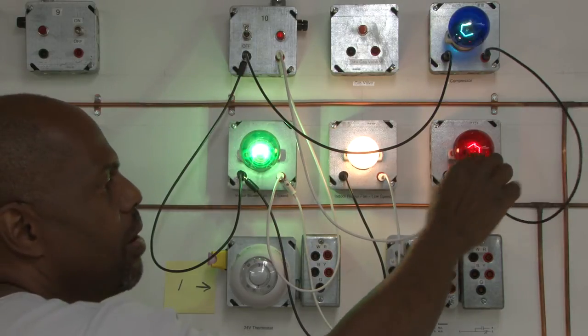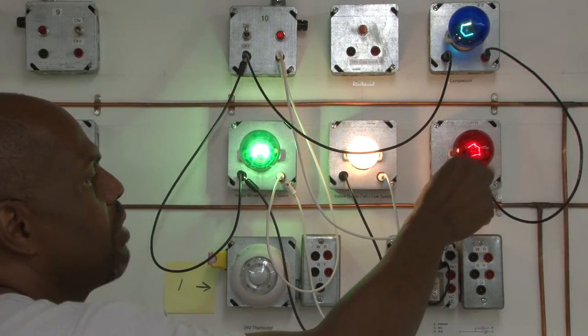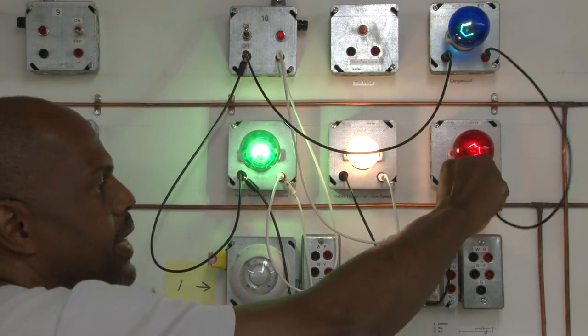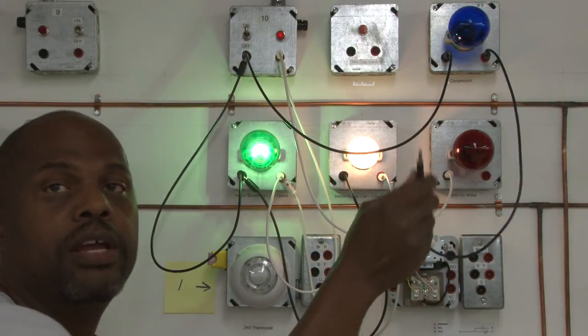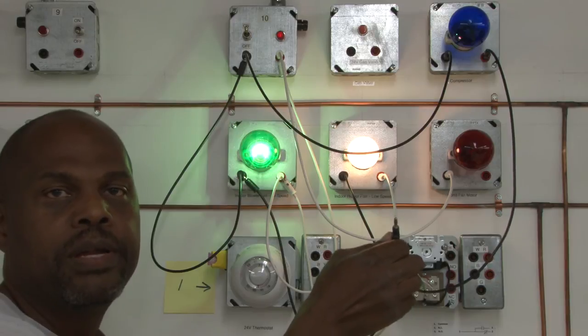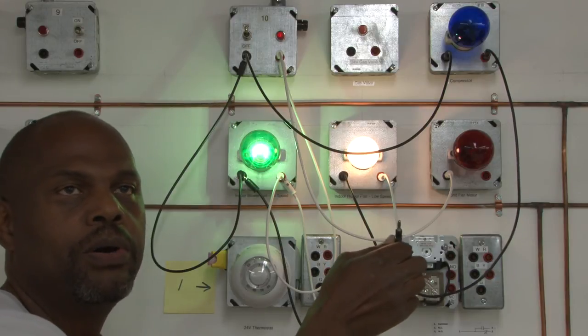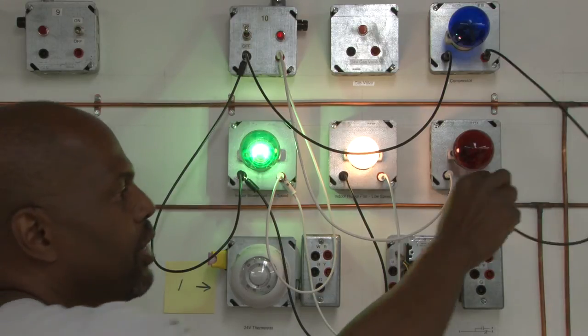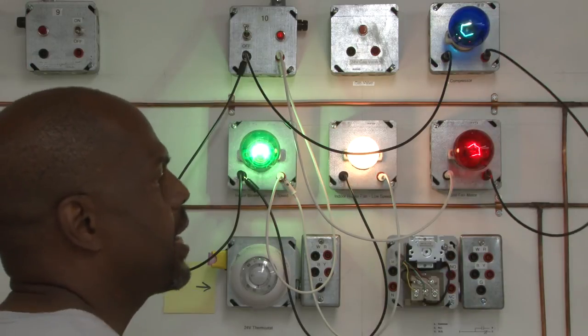But if I take off the power source from one of these bulbs, these two will go dead. Because in a series circuit, if you open up any of the loads, you will kill the whole complete circuit. Put it back, you see it will glow.